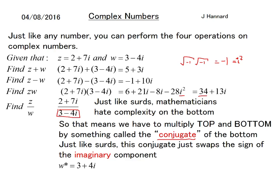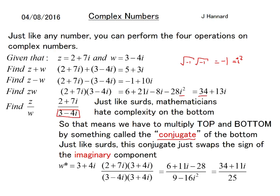So w*, that's the notation for the conjugate, equals 3 + 4i. We multiply like that, remembering i² equals -1. You end up with (2 + 7i)(3 + 4i)/(3 - 4i)(3 + 4i) = (6 + 11i - 28)/(9 - 16i²) = (34 + 11i)/25. That is the answer and that is today's lesson.